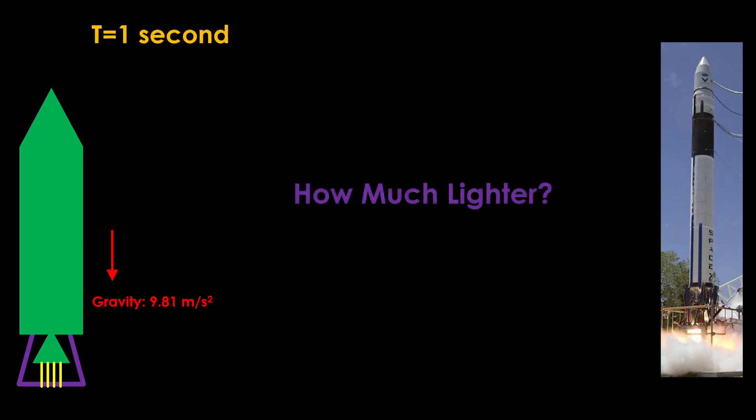How have things changed one second into the flight? The rocket will be lighter because of the burned propellants, but how much lighter? That depends on mass flow rate, which is the amount of propellant burned every second. There are two different ways of calculating mass flow rate.